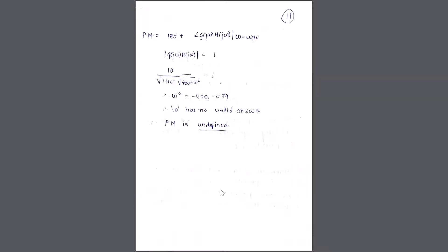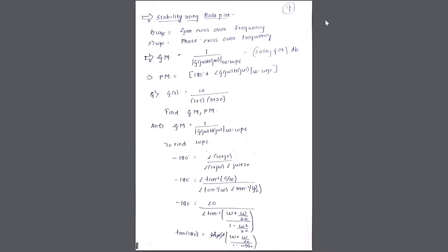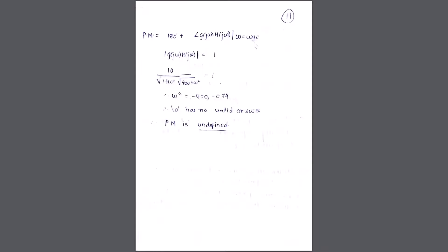For the phase margin, PM = 180° + angle of G(jω)·H(jω) at ω = ω_gc. To find ω_gc, set |G(jω)·H(jω)| = 1. Solving this gives ω² = −400 and −0.74, both negative. Since the square of any real number cannot be negative, ω_gc has no real value, and therefore the phase margin is not defined.